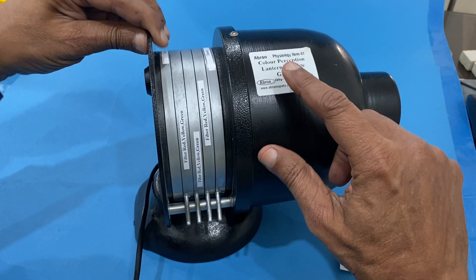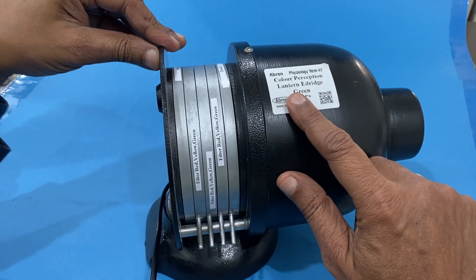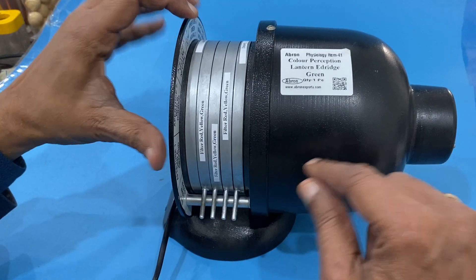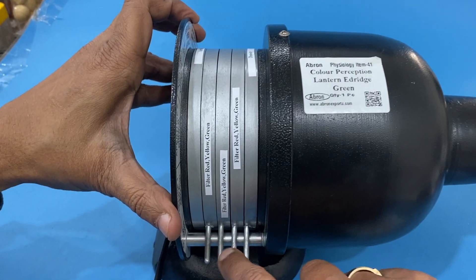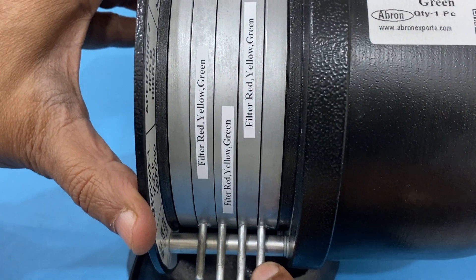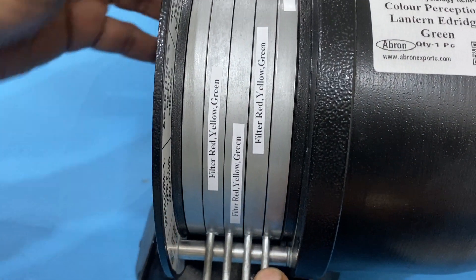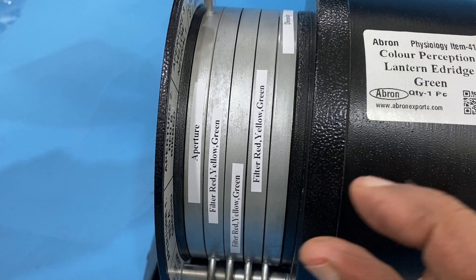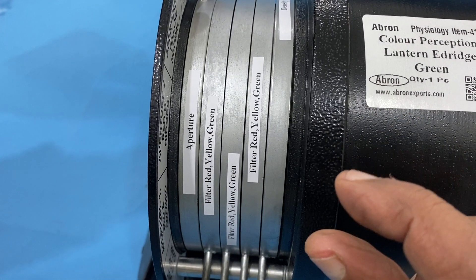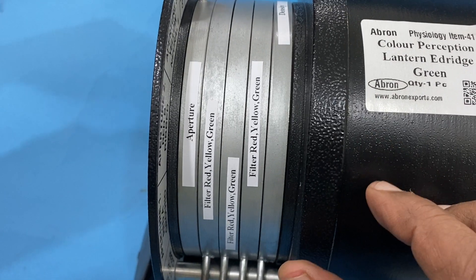This is a color perception lantern with a combination of filters: red, blue, and green - three colors of filter. One, two, three - all are the same, but this one controls the density. The first one is an aperture, which determines the size of the diameter and how much of the view is visible.